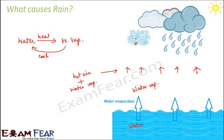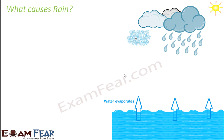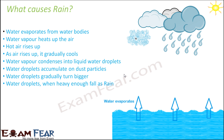Let's look at a quick recap of the entire process of rain formation. First, water evaporates from water bodies in the presence of the Sun. This water vapor heats up the air, and since hot air is less dense, it rises up — carrying the water vapor with it. As the air rises, it gradually cools. When it cools, the water vapor condenses to form liquid water droplets. These droplets accumulate on dust particles in the atmosphere, turn bigger and bigger, and when heavy enough, fall as rain.